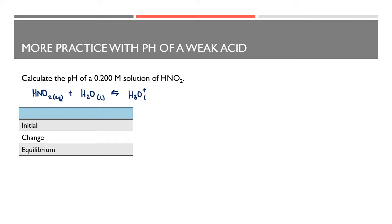So we have HNO₂ in aqueous solution with water as a liquid, in equilibrium with those hydronium ions and the NO₂⁻ ion — both of those products are in aqueous solution. So if we write out the equilibrium constant expression, we include all of the aqueous substances but leave out the liquid water. According to my Ka table, the Ka of HNO₂ is 4.6 × 10⁻⁴.